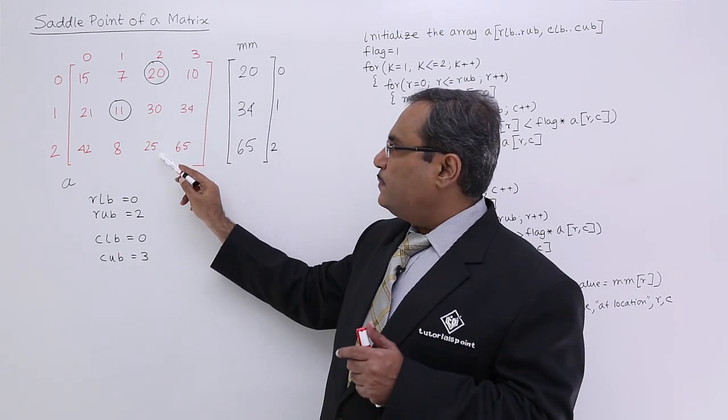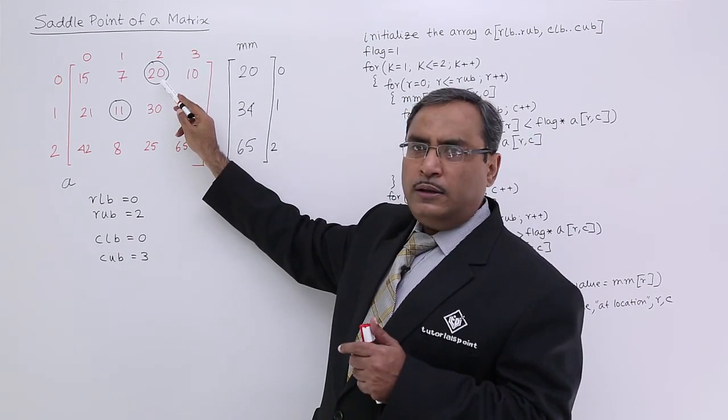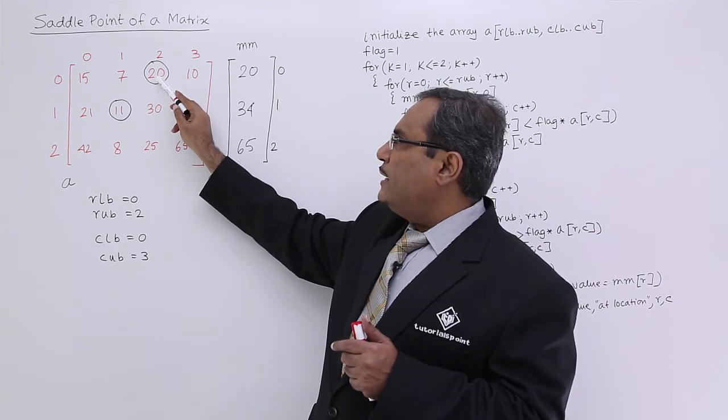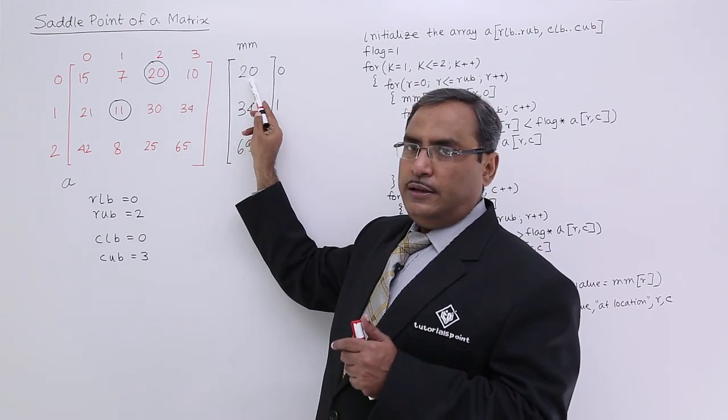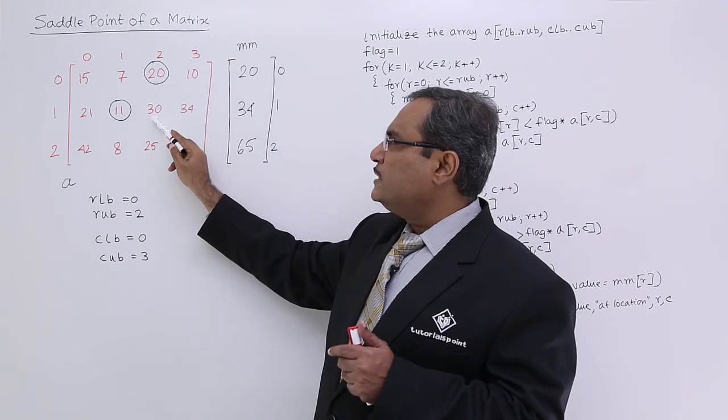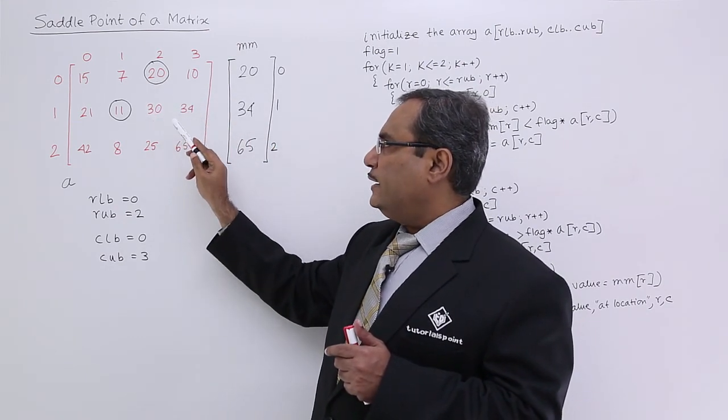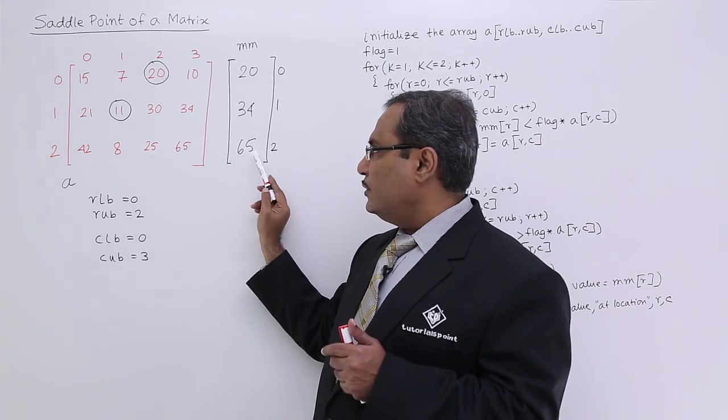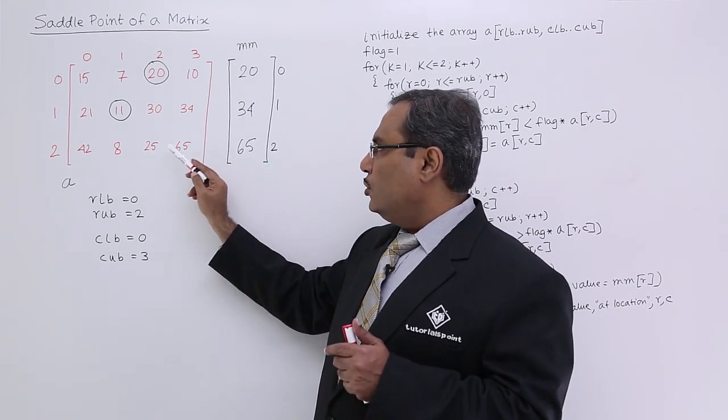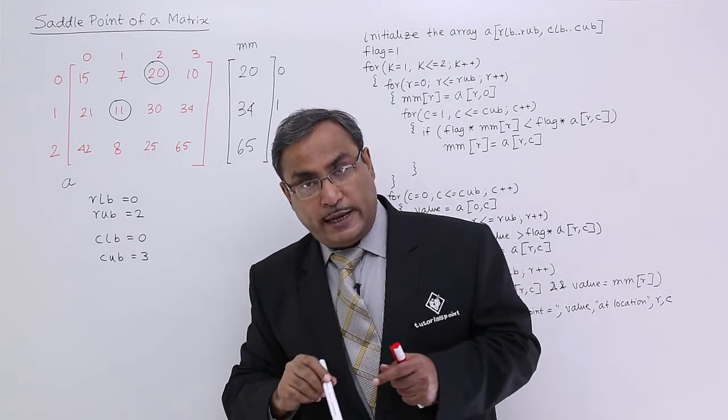Let us suppose here in this particular column, what is the minimum one? That is 20. Then if it is 20 and here if it is 20, then it is a saddle point. If it is 20 and the 20 is here also, then that will be saddle point. This way the process will indicate it is a saddle point.